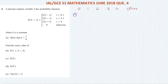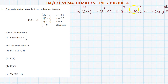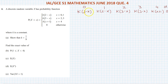Substituting the values: at X = 0, P(X) = K(2 minus 0) which is 2K. At X = 1, P(X) = K(2 minus 1) which is K. At X = 2, P(X) = K(3 minus 2) which is K.